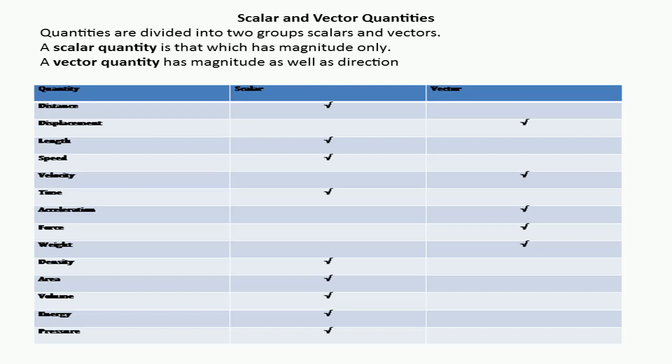Density is a scalar quantity; it does not depend on direction. Similarly, area is also a scalar quantity. Volume is also a scalar quantity. Energy — we take energy drinks to boost our energy — energy is also a scalar quantity and does not need direction. Pressure is also a scalar quantity. These are some of the examples of scalar and vector quantities used in the O-level Physics course.